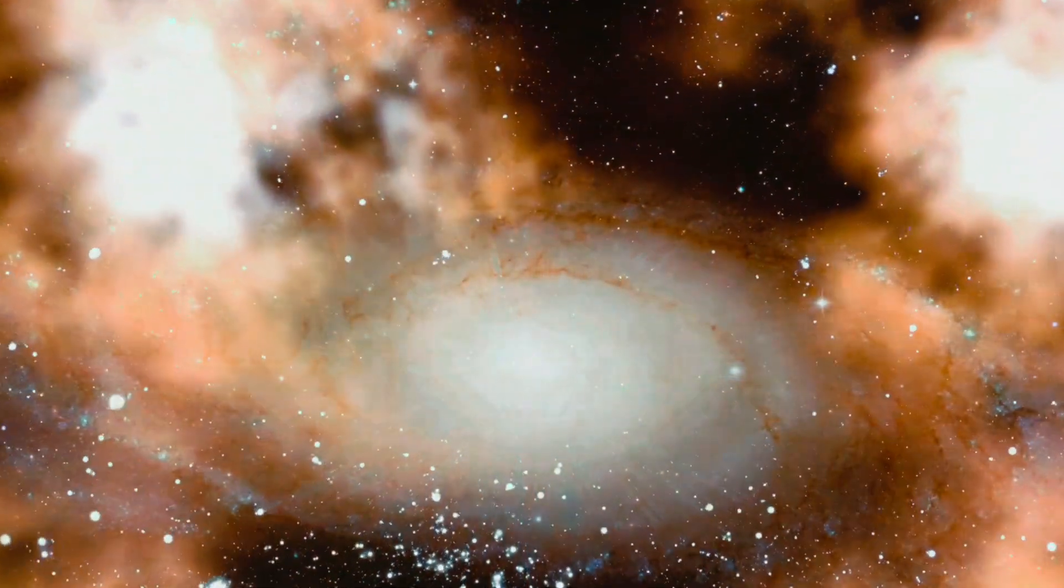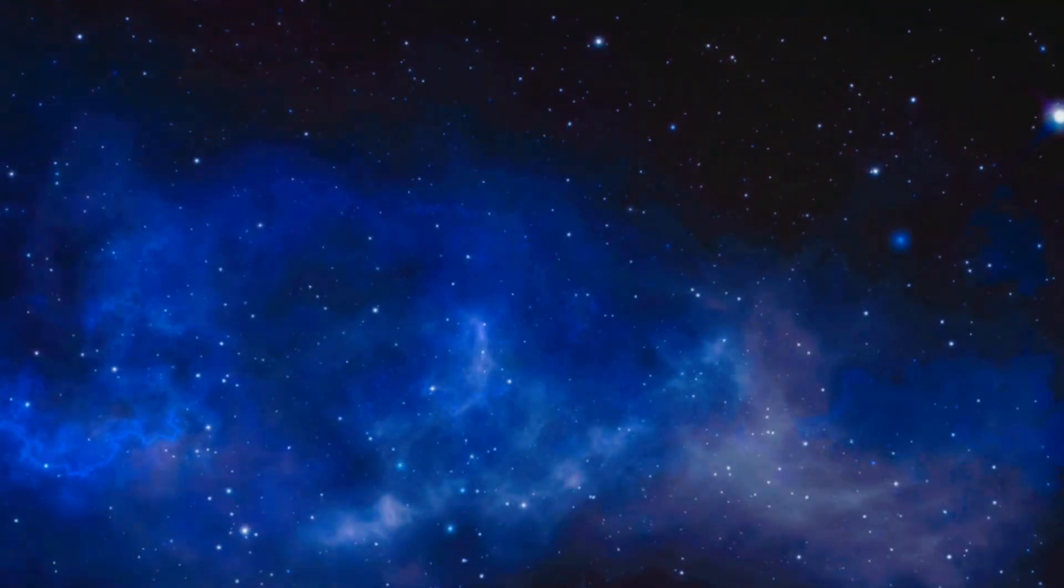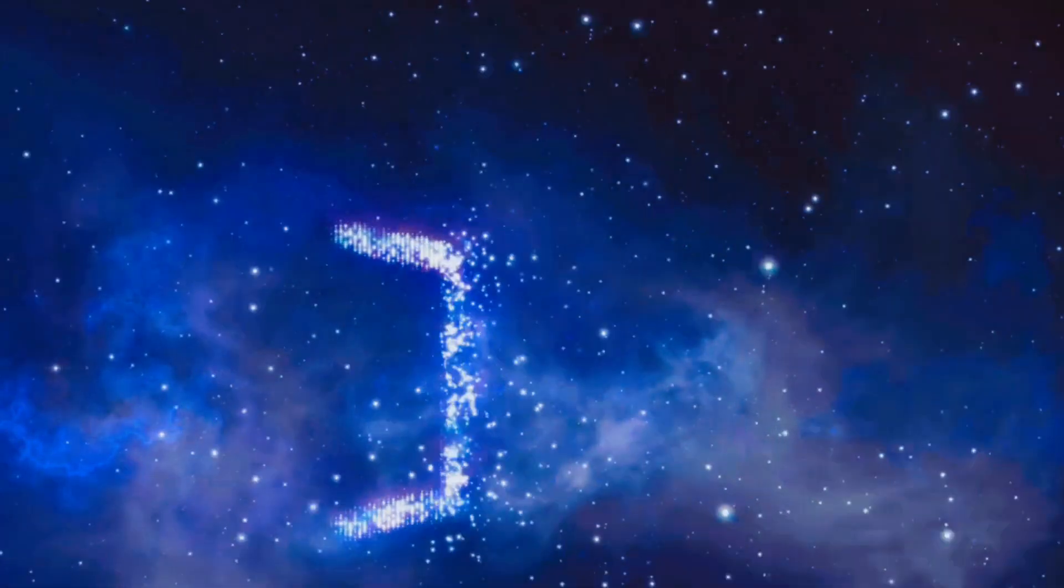They scatter heavy elements, forged in the heart of dying stars, into space. Elements like carbon, oxygen, and iron are created in the intense heat and pressure of a star's core. When the star explodes, these elements are ejected into the cosmos, enriching the interstellar medium.